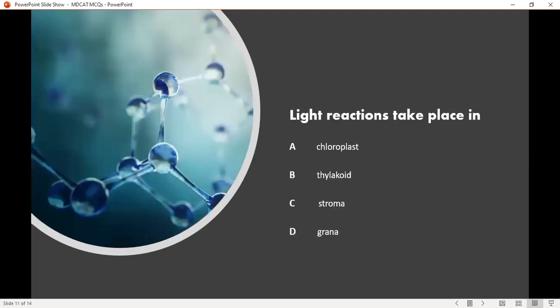Light reactions take place in option A chloroplast, option B thylakoid, option C stroma, and option D grana. The correct answer is option D grana.